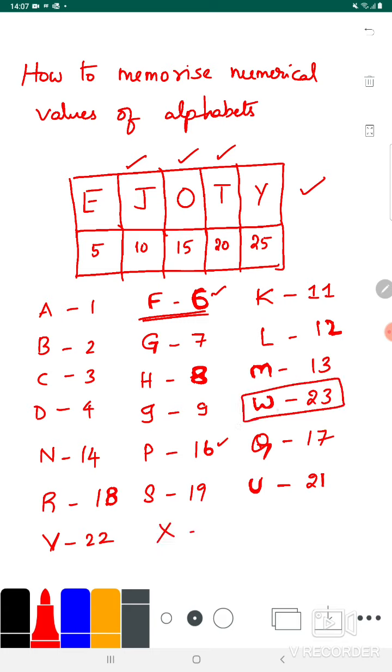Coming to X, if you observe, it looks like a 4. If I join this, X is 24. And you know very well that Z equals 26.